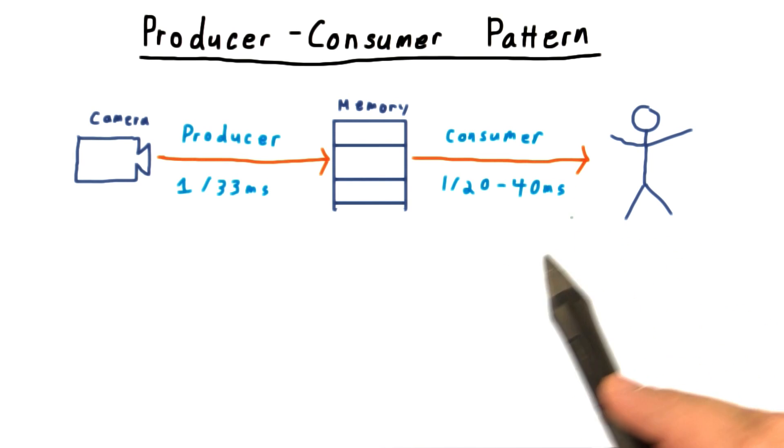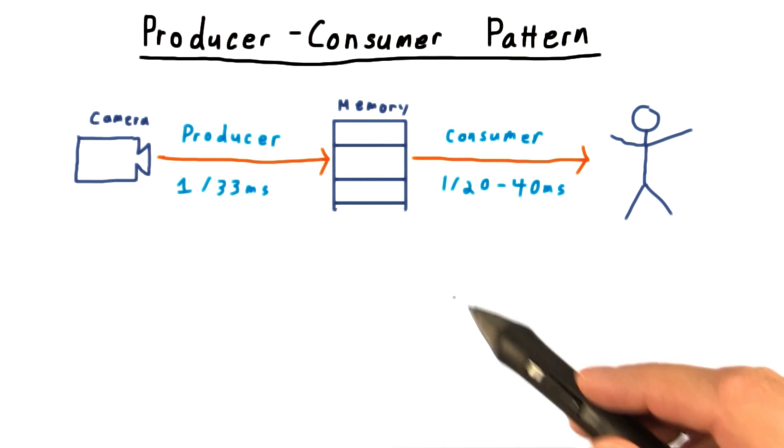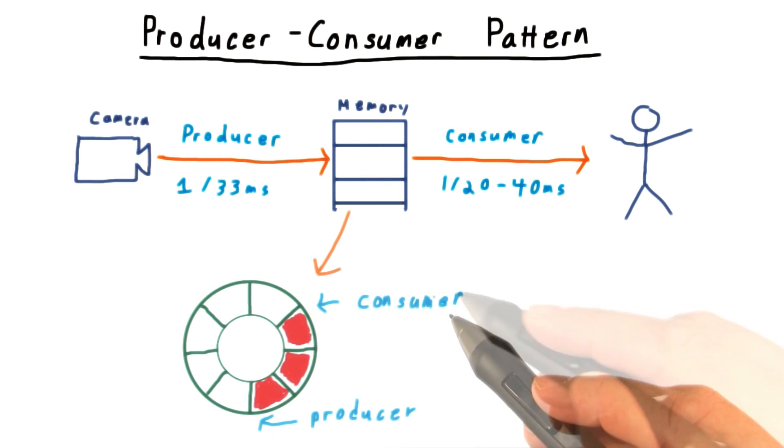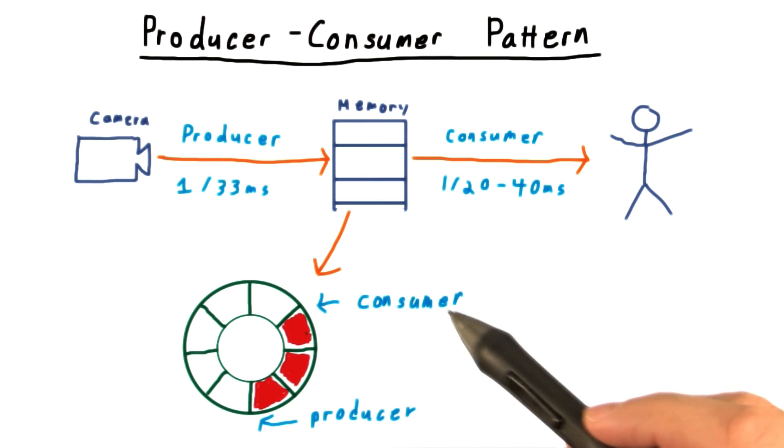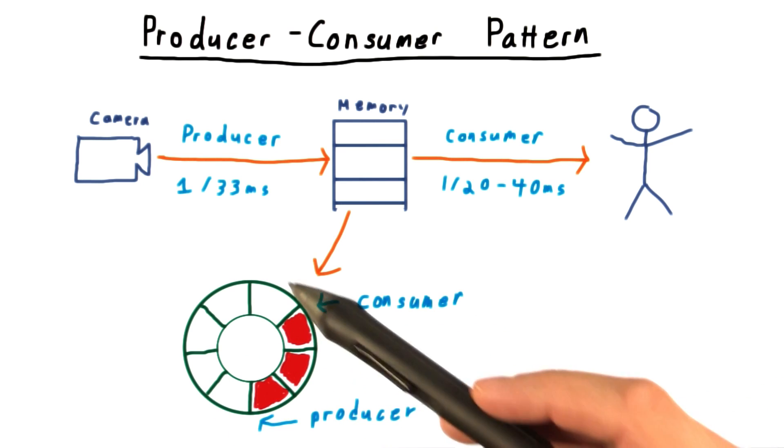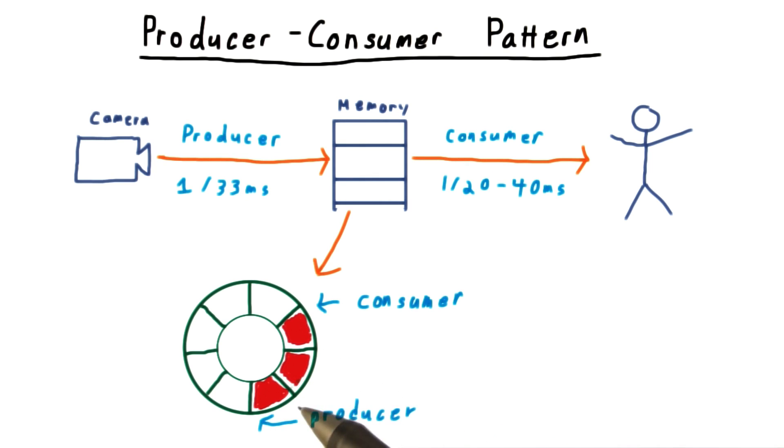Because of the variability in the time it takes to process the image, we need a place in which to store images that our consumer thread is not yet ready to handle. And for this, we'll use a ring buffer. Each division here represents memory for a frame from the camera. The ones that haven't been consumed yet, I've colored in red.